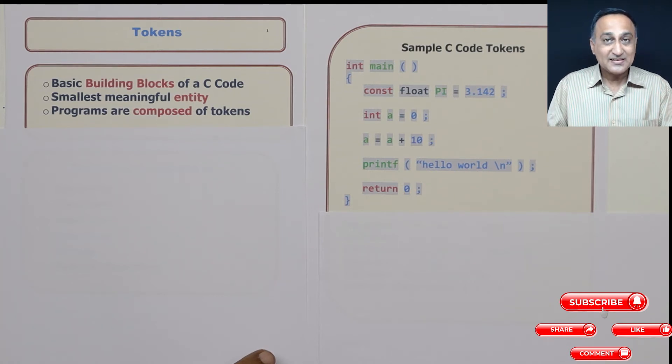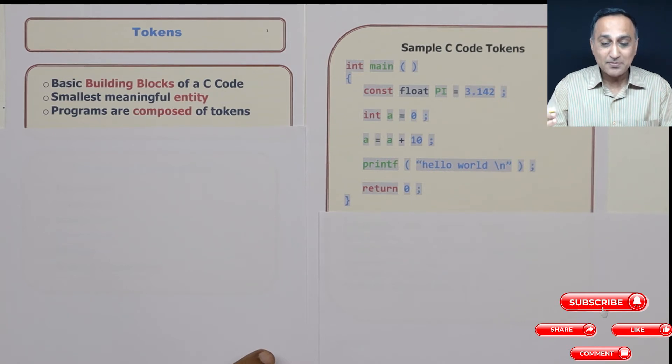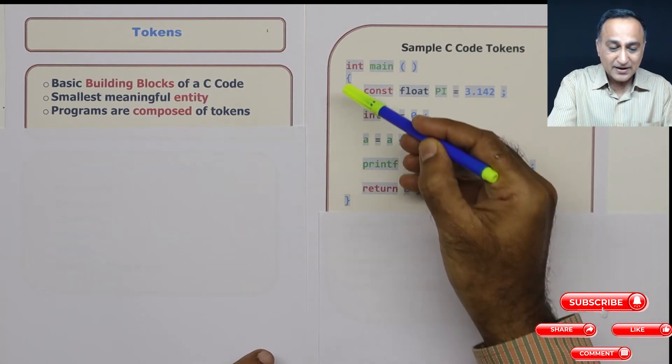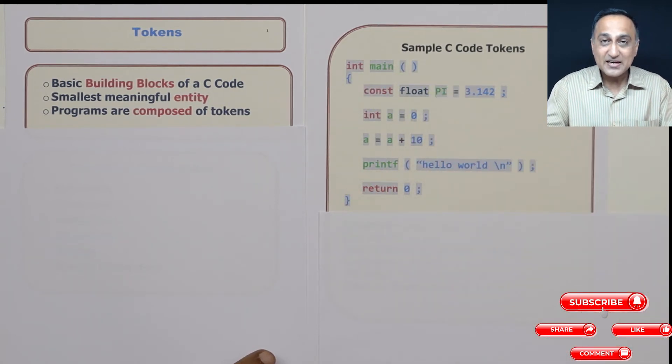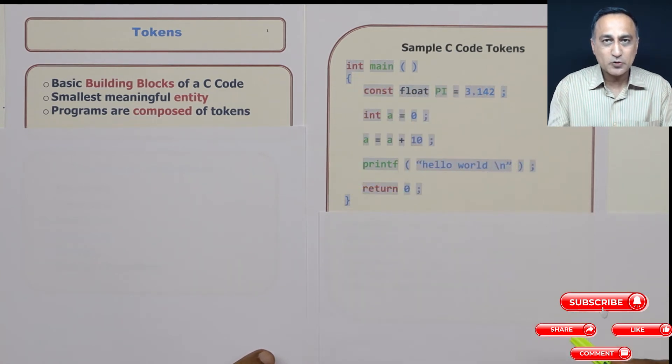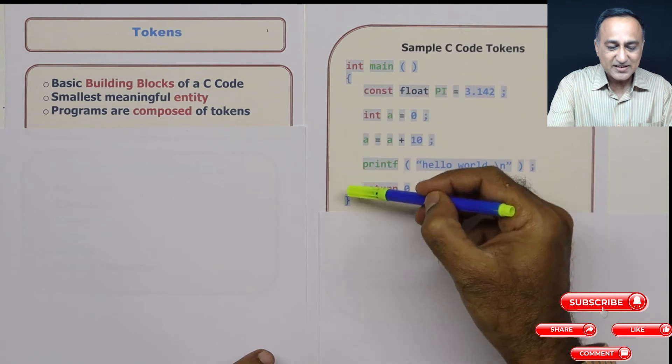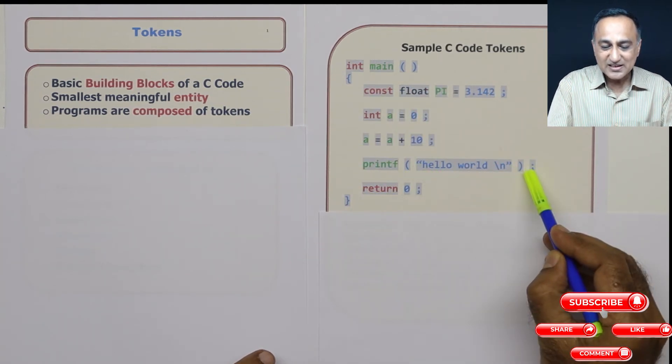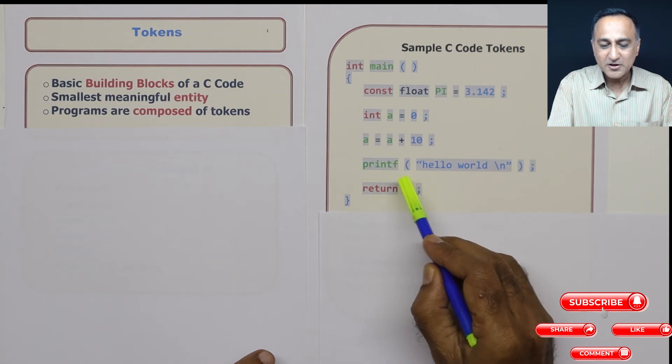The fourth type of token happens to be symbols like flower bracket, the round parenthesis. These are special symbols because they have special meaning in a C program. This indicates the beginning and end of a block.